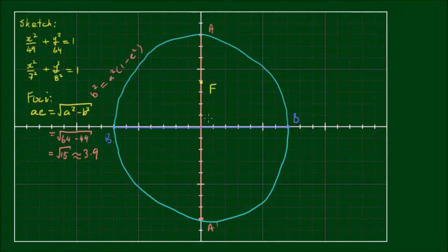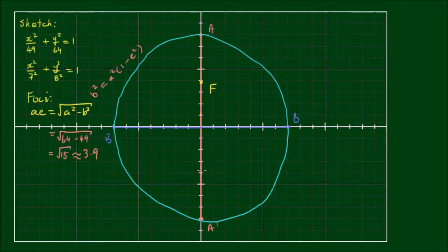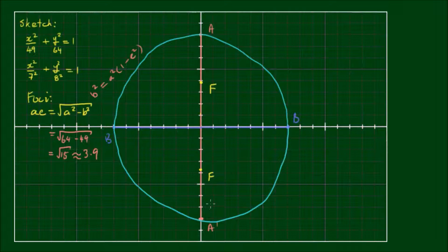So we have the focal point along the semi-major axis at 3.9 away from the center — so at y equals 3.9, here is the focal point f. And similarly, at 3.9 below the center, here is the focal point f prime. And now the directrices.